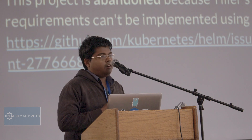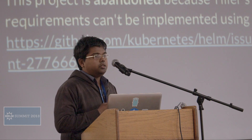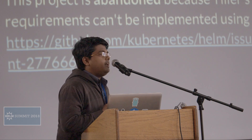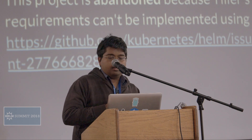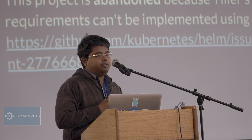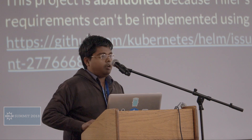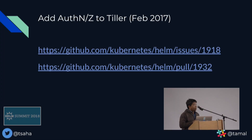After doing a prototype and talking to the people working on RBAC from the Red Hat team, it became clear that using a controller approach, you cannot really achieve the authorization requirements that Tiller needs. You can go back to that issue and learn about the details. Then we started looking into introducing authentication and authorization to Tiller directly. There was a lot of discussion and design around that, but that issue is still open — issue number 1918.